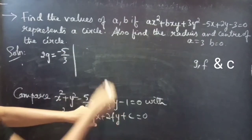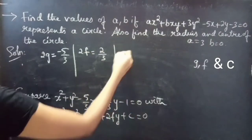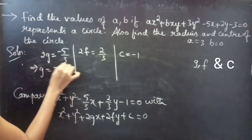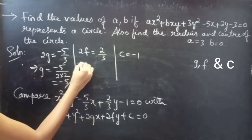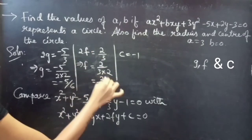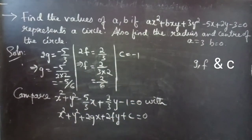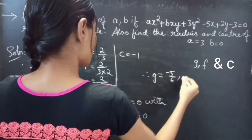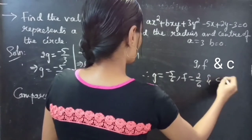Comparing the coefficients of y, we get 2f equals 2 over 3. Equating the constants gives c equals minus 1. Therefore g equals minus 5 over 3 divided by 2, which equals minus 5 over 6. And f equals 2 over 3 divided by 2, which equals 2 over 6, that is 1 over 3. And c equals minus 1.